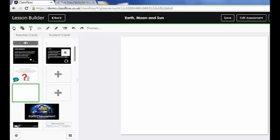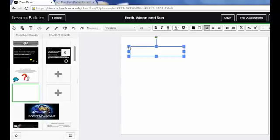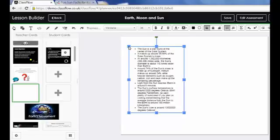Back in ClassFlow, I then want to select the text button from the toolbar at the top to open a text box onto my card and then I simply Ctrl V to paste that text back in.